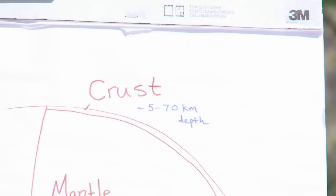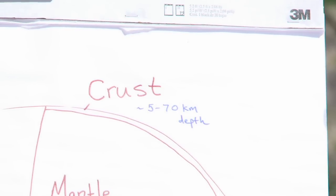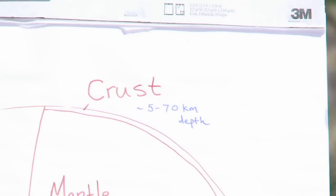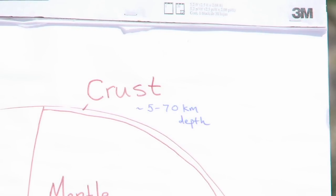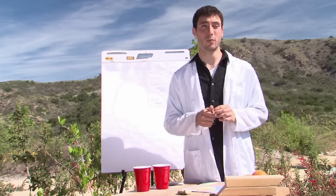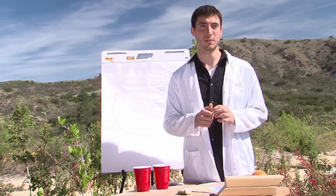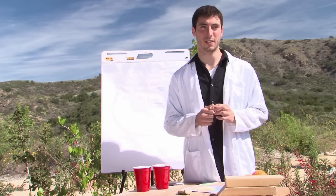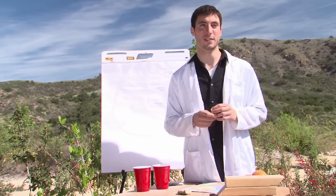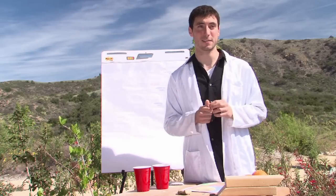Above that is the earth's crust — that's the part of the earth that we're all on right now. The crust, even though it's the part we know best, is only about 1% of the entire earth's volume.